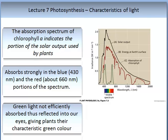In the figure on the slide, you can see the solar output from the sun, the amount of energy that hits the Earth's surface in red, and in green the amount of absorption by chlorophyll. Chlorophyll absorbs strongly in the blue and red regions. Green light is not substantially absorbed and is thus reflected into our eyes, giving plants their characteristic green colour, although there is some debate about the colour.